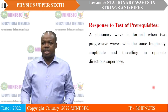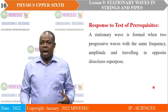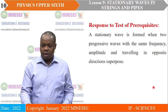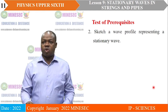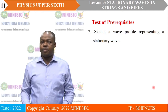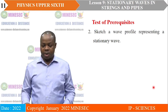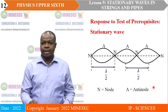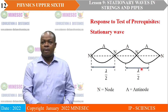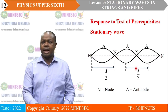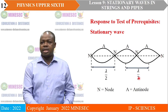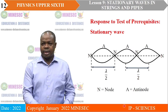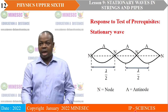When two progressive waves having the same frequencies, amplitude, and traveling in opposite directions superpose, a stationary wave is formed. Sketching the wave profile: the ends represent the nodes, the middle represents the antinodes, and the distance between two successive nodes or two successive antinodes gives λ/2, which is half a wavelength.